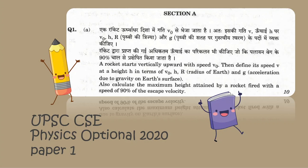Hello everyone. In today's video, we'll be solving a question from the UPSTC SC Physics optional 2020, Paper 1. The question says: a rocket starts vertically upward with speed v₀. Define its speed v at height h in terms of v₀, h, r (radius of Earth), and g (acceleration due to gravity). In the second part, we calculate the maximum height attained by a rocket fired with 90% of escape velocity.